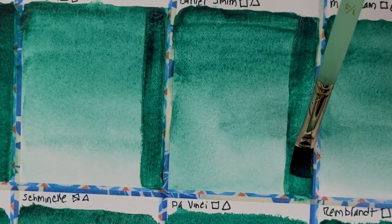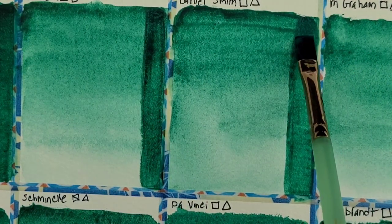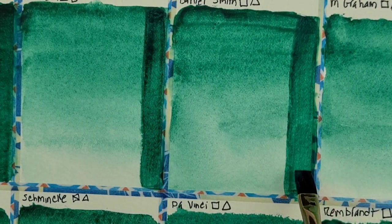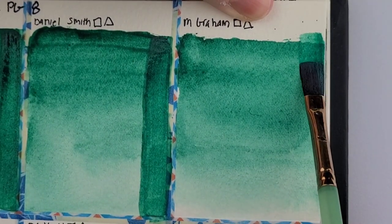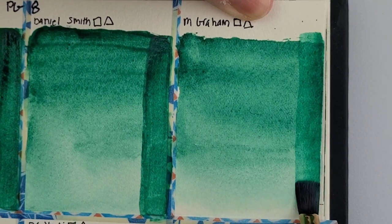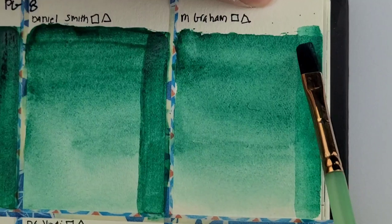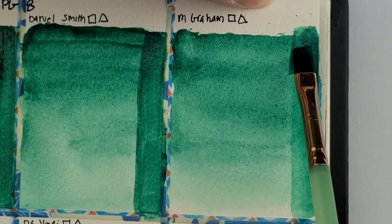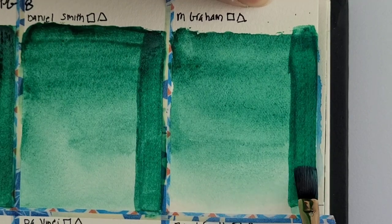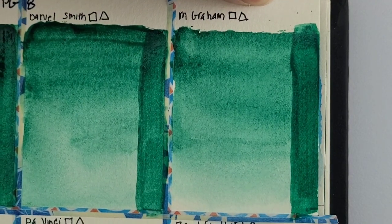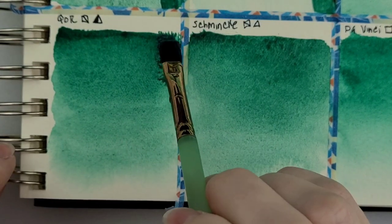So now we're watching Daniel Smith. And I had no issues glazing any of the ones on top. M Graham, which is probably one of my favorites. The only reason I would like Winsor and Newton over M Graham is because of that strong, strong granulation. But currently M Graham is what I have in my main palette.